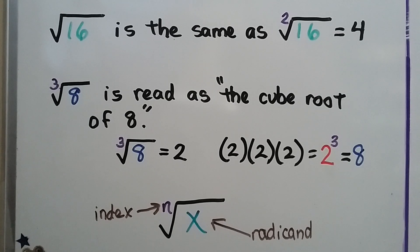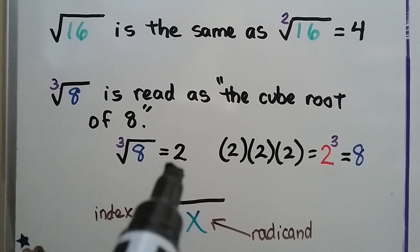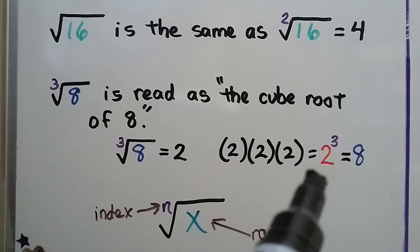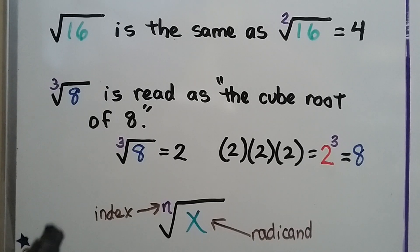When there's a little 3 here, it's read as the cube root of 8. The cube root of 8 is 2, because 2 times 2 times 2, which is 2 to the third power, 2 cubed, equals 8. This little number here is called the index, and this underneath the radical sign is the radicand.